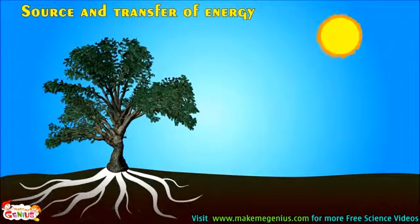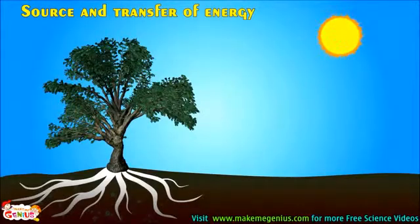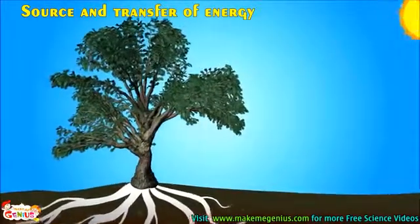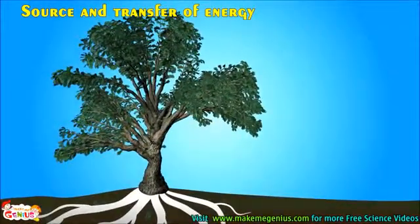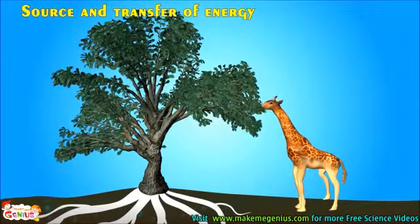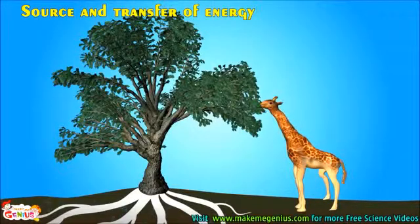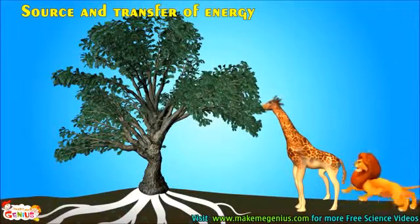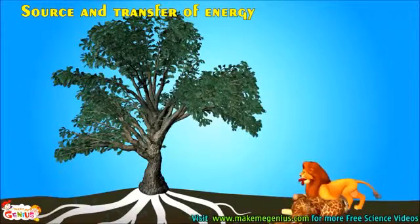Now, where does this energy come from? Most living species use the sun's energy. This energy is transferred to the body via the food they eat. The sun gives light energy, which is used by plants to make their food by photosynthesis. These plants are eaten by primary consumers and energy is transferred to them. Then secondary consumers eat these primary consumers, and energy is transferred to them too.